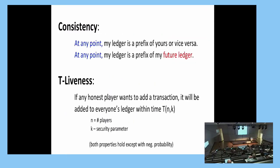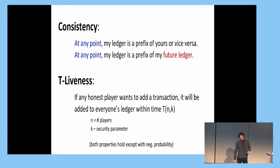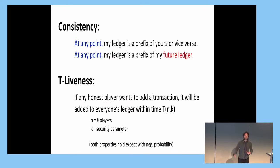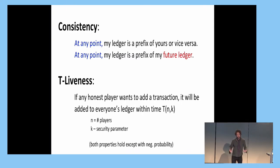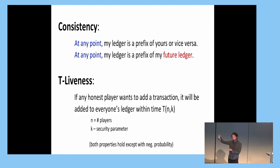A little bit more formally, consistency actually consists of two parts. The first one says that at any given point in time, if we take two nodes — me and you — either my ledger, my view of the transactions confirmed so far, is a prefix of yours or vice versa. The second property, sometimes called future self-consistency, says that my ledger should always be a prefix of my future self.